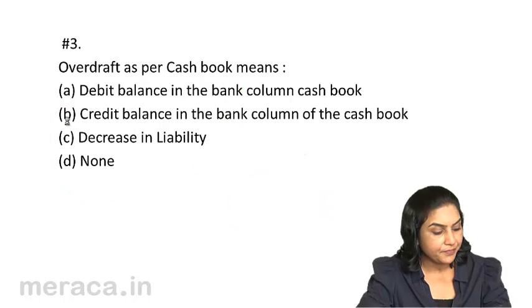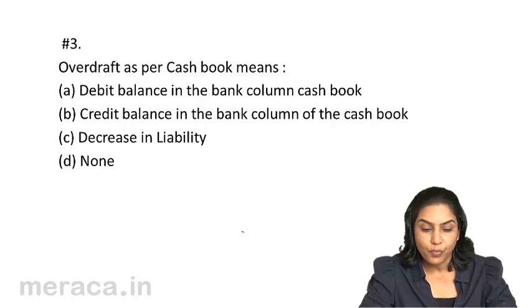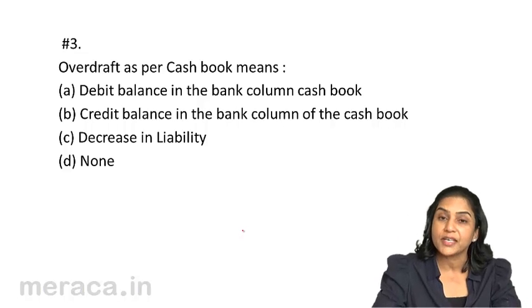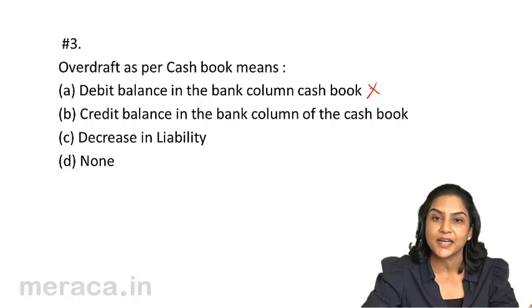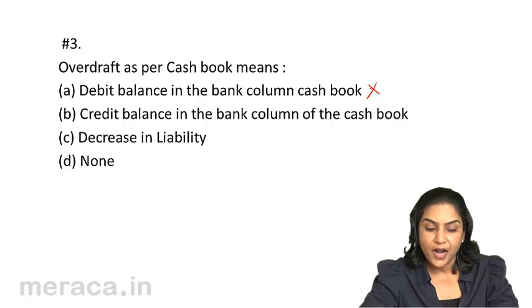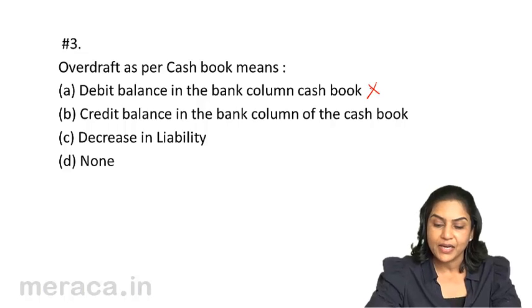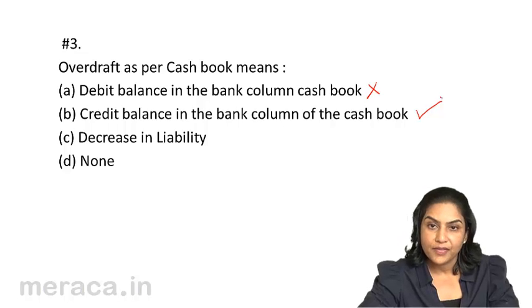Question 3: Overdraft as per cash book means — is it a debit balance in the bank column of the cash book? No, a debit balance in the bank column is a favorable, positive balance, because all receipts are debited in the cash book. Is it a credit balance in the bank column? An overdraft as per cash book would mean a credit balance in the bank column, because all payments are credited and overdraft is payments more than receipts.